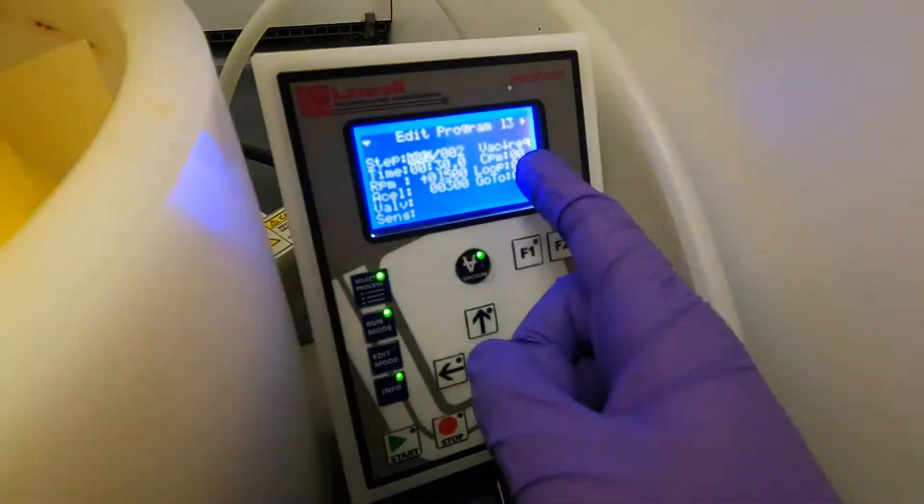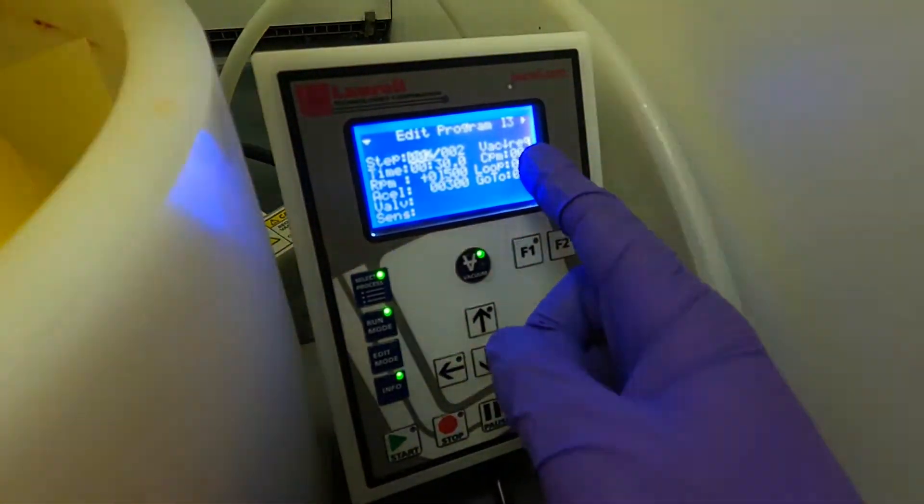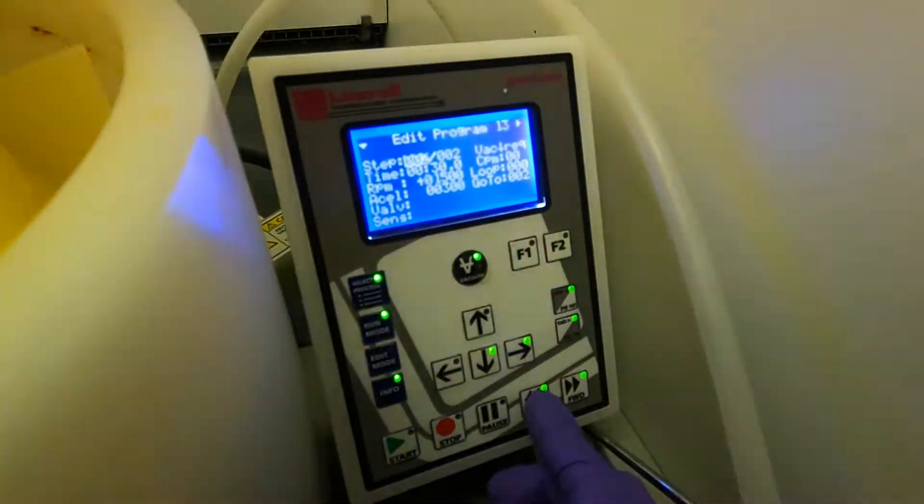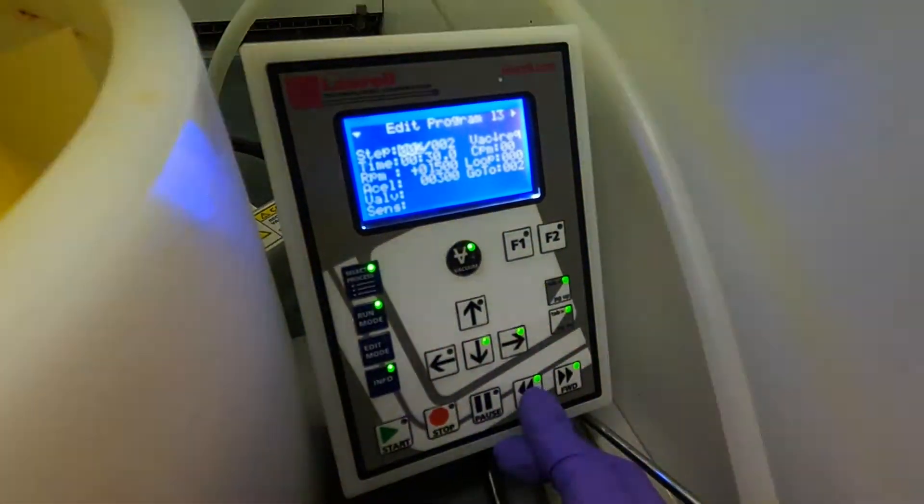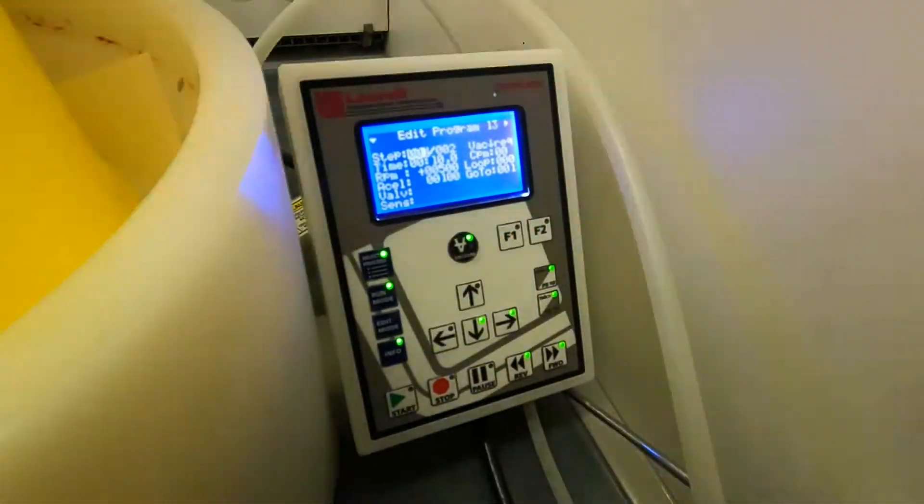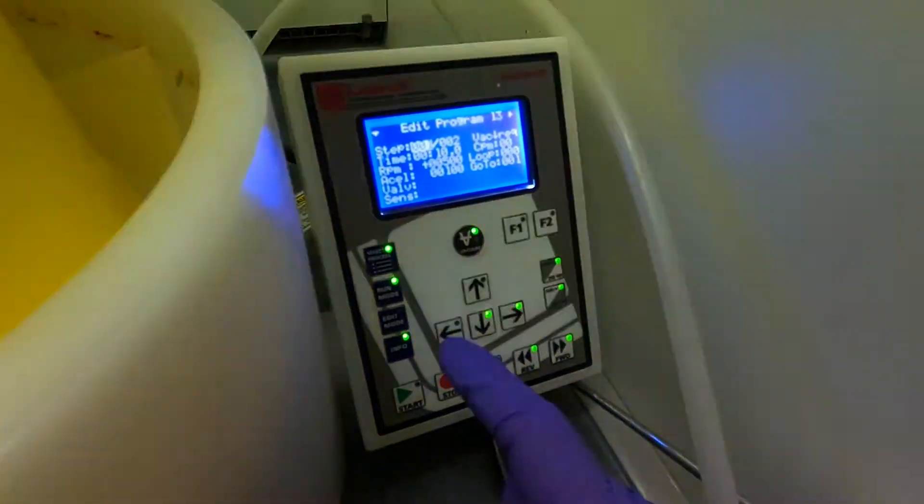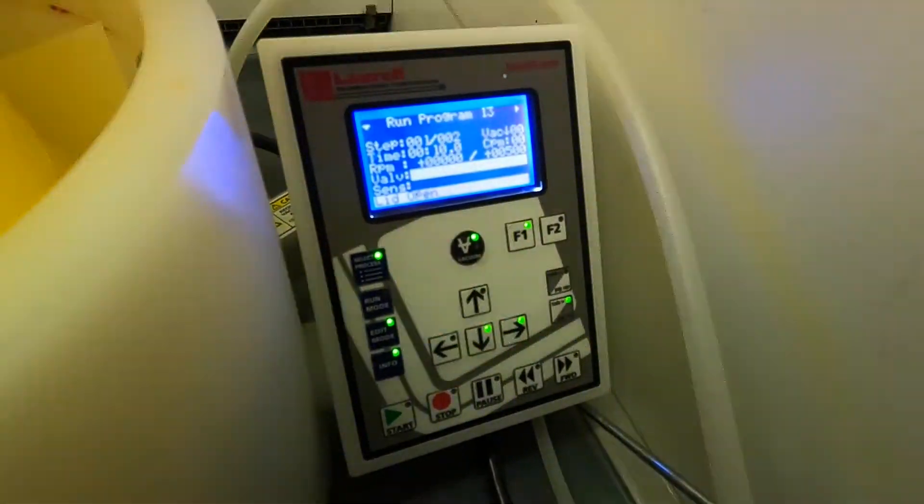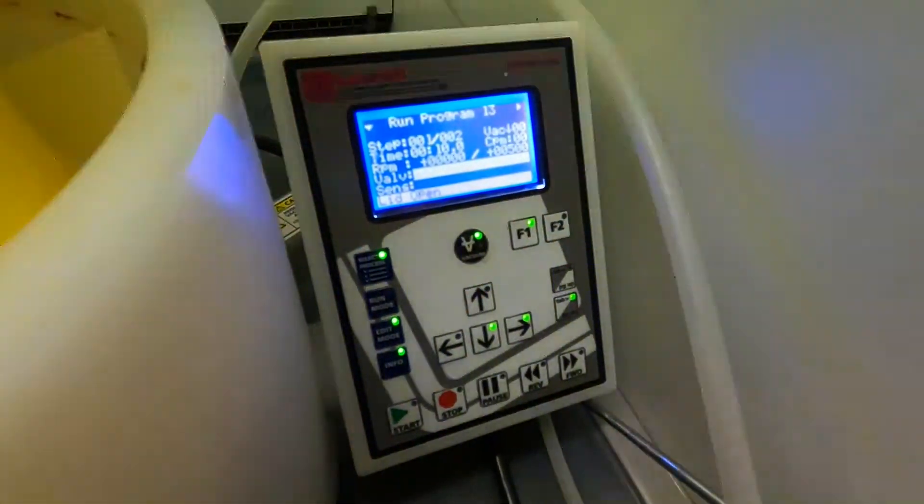Throughout this whole thing you see that we have this vacuum option and we always want to keep that option as required for both the first step and the second step. So this now has the settings that I want, so I'm happy with that. I can switch now to the run mode and this will make the spin coater ready for spinning.